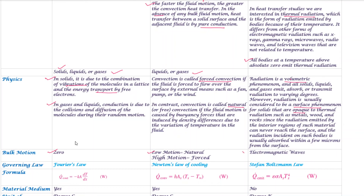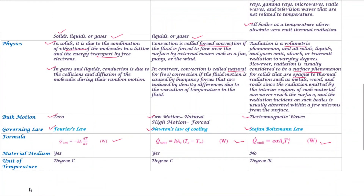For the conduction equation, a scientist gave us the conduction equation based on experiment. For convection, Newton is the scientist and this is Newton's cooling law equation. For radiation, there is the radiation equation — Stefan-Boltzmann's law: Q = σ × ε × A × (Ts⁴ − T∞⁴). For conduction: Q = −kA(dT/dx), where k is thermal conductivity, A is the area, and dx is the thickness. For convection: Q = hA(Ts − T∞). In conduction and convection, we calculate using degree Celsius, but for radiation we use degree Kelvin.